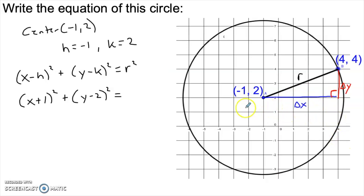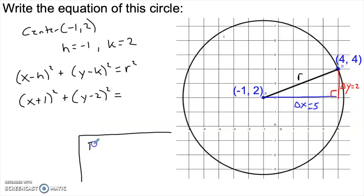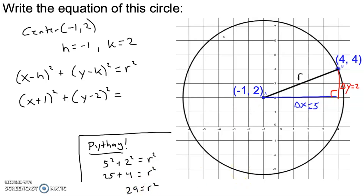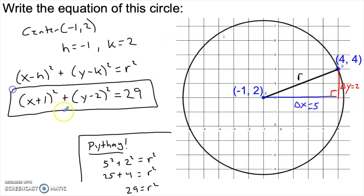We use Pythagoras: connect the center to a point on the circle and create a right triangle with horizontal and vertical components. Delta x goes from -1 to 4, so it's 5. Delta y goes from 2 to 4, so it's 2. Pythagoras tells us 5 squared plus 2 squared equals r squared, which means r squared is 29. The equation of the circle is (x + 1) squared plus (y - 2) squared equals 29.